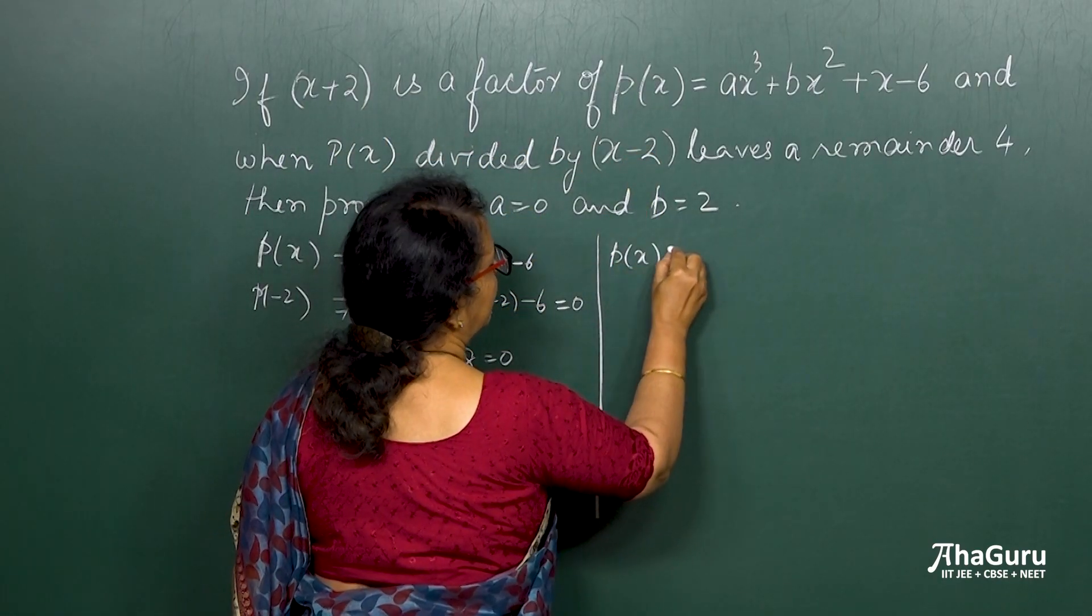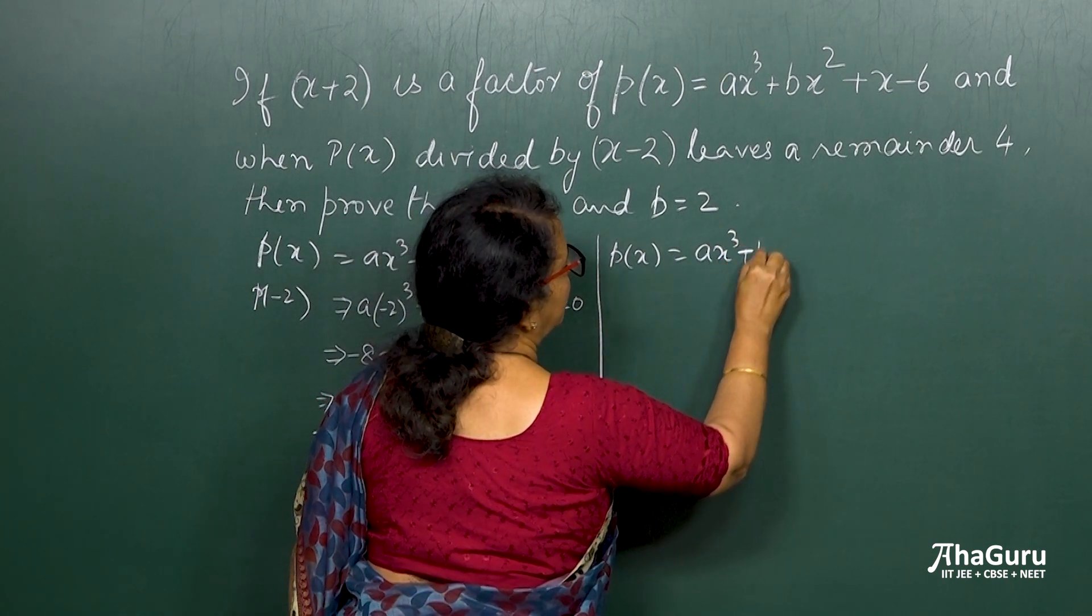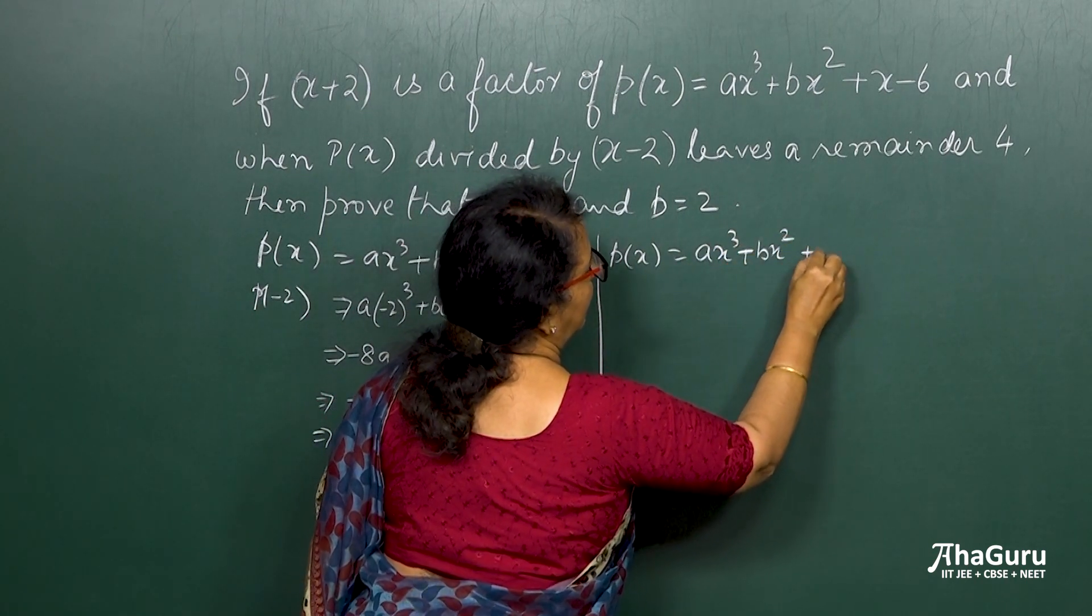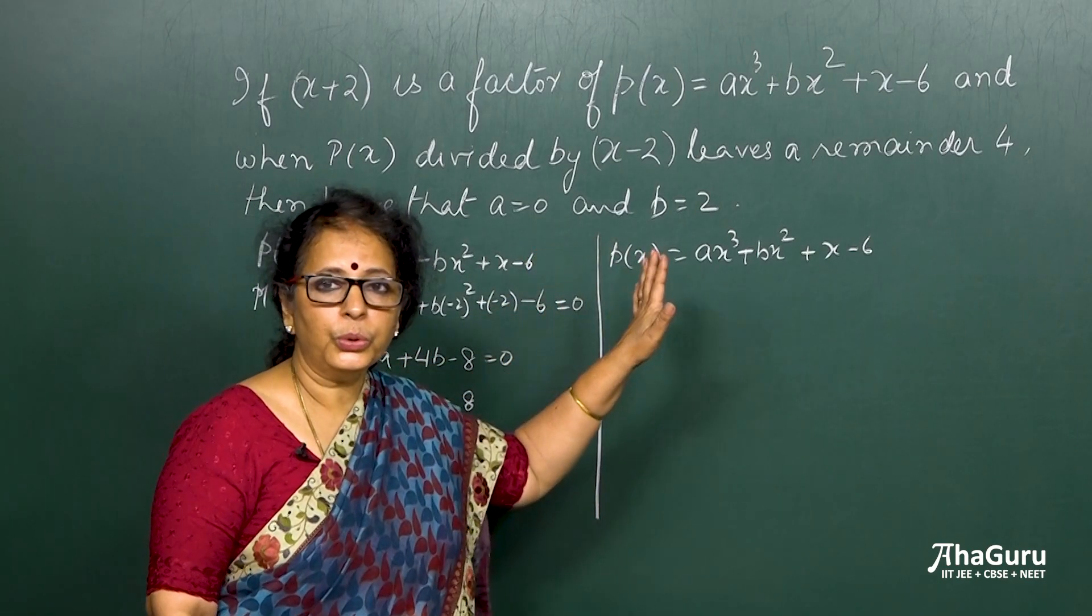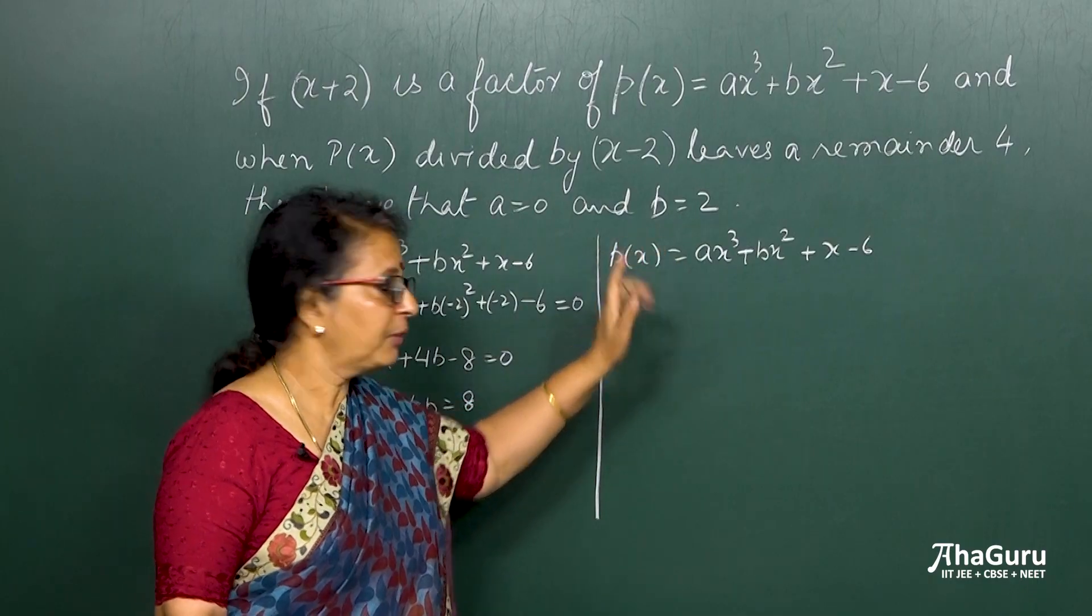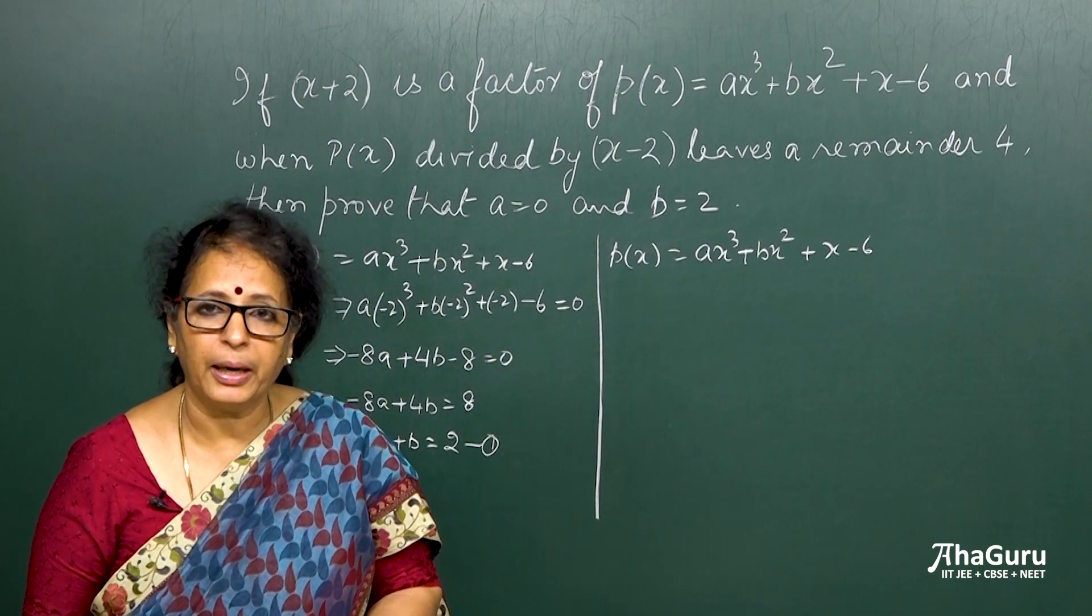So polynomial will write the same thing, p of x, which is given as ax cube plus bx square plus x minus 6. Now x minus 2 is not a factor, but when I divide this by x minus 2, it leaves a remainder.